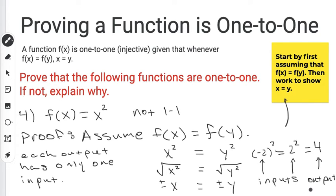Because an output has more than one input, this function cannot be one-to-one. So f(x) equals x squared is one of the functions that we can't consider to be one-to-one.